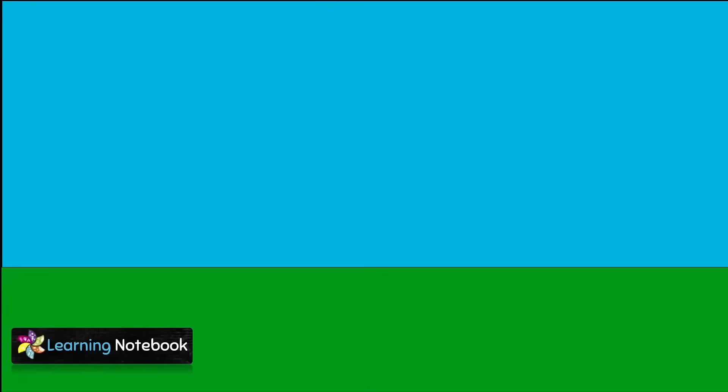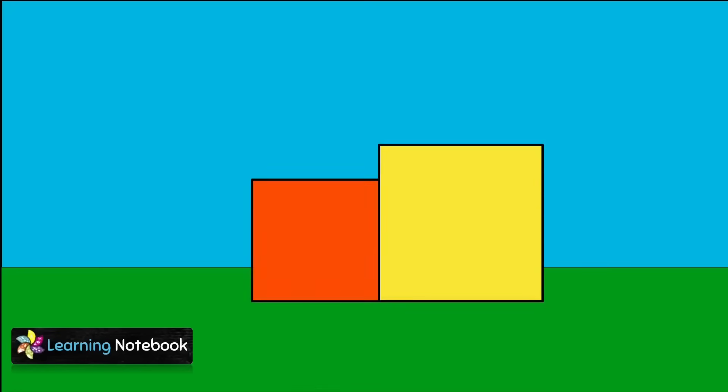Our next creative activity is making train scenery with the help of different shapes. Again, take a blue colored sheet and paste a big green rectangle on it as shown. Then cut out and paste an orange colored square and a big yellow colored square to form the engine.